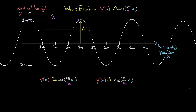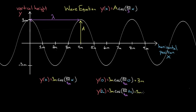If I leave x as a variable, this function tells me the height of the wave at any point x. Let's test it. If I plug in zero for x, the cosine of zero is just one, so the function gives three meters — and that's true, the height at x equals zero is three meters. Let's try x equals two meters: three meters times cosine of two-pi times two over four, which is cosine of pi, and cosine of pi is negative one, so I get negative three meters. That's correct — the height at two meters is negative three meters.